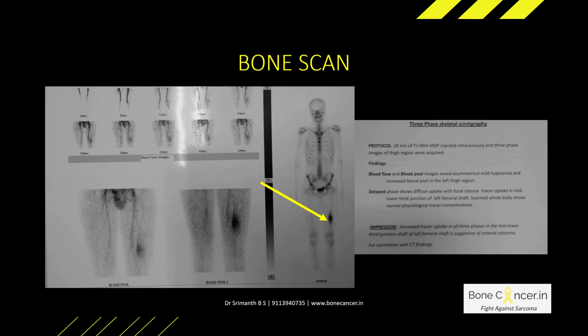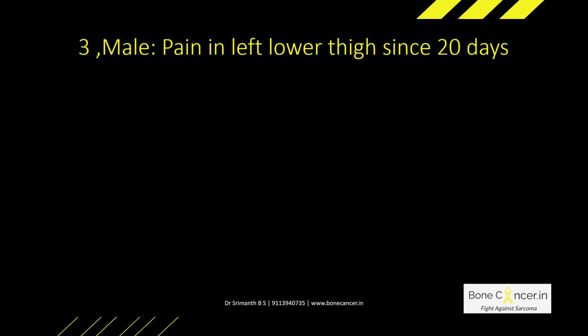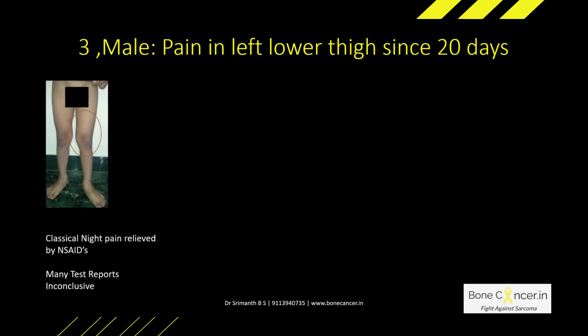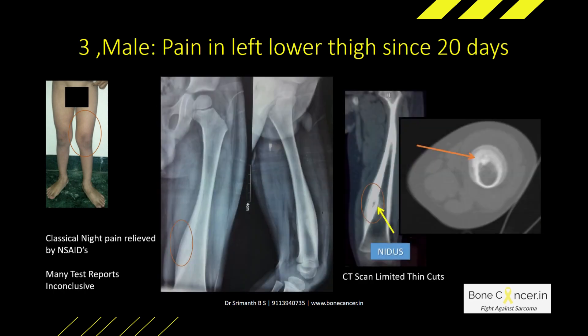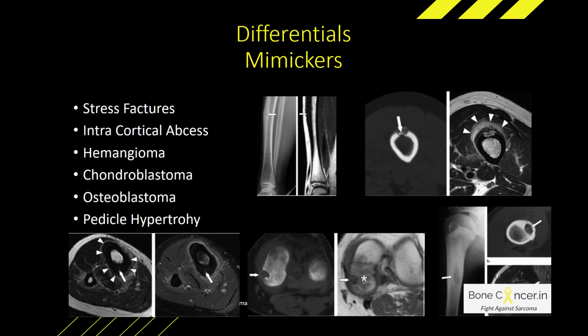With the confirmation of these lesions, here is a case example wherein we had a child with many test reports being inconclusive, and we could find that there was nice bone formation with a thick nidus. There are a lot of mimickers also — one needs to keep that in mind.